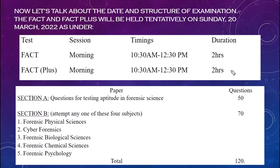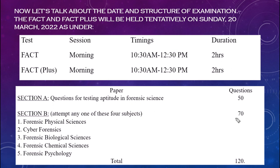There will be two sections. Section A is compulsory and includes forensic science questions — 50 questions carrying 50 marks. Section B requires you to attempt any one of the five subjects. For each specialization subject, there will be 70 questions, each for one mark. The total exam will be 120 marks. There is no negative marking as per the notification.